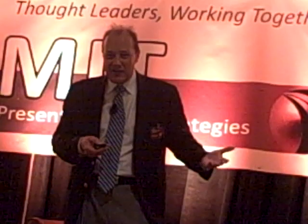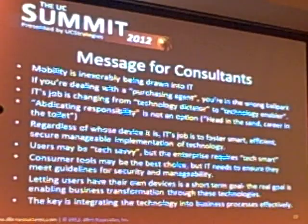That's probably the biggest challenge we're facing today — if they haven't seen the problem yet, will they really believe it could potentially happen to them? Because regardless of whose device it is, it's IT's job to sponsor smart, efficient, secure, and manageable implementation of technology. The phrase I always like to use with clients: users are tech savvy, but IT's got to be tech smart. That's the big difference between consumer and enterprise mobility. The consumer tools may be the best choice, but we've got to be sure they are tech smart. Letting users have their own device is really a short-term palliative — you've still got to keep your eye on the long-term goal, which is not about making people smile. It's about making the business more efficient, more effective, more productive, and ultimately more profitable. The key is integrating that technology into existing business processes in an enterprise-ready fashion. And that's what I came to talk about today.